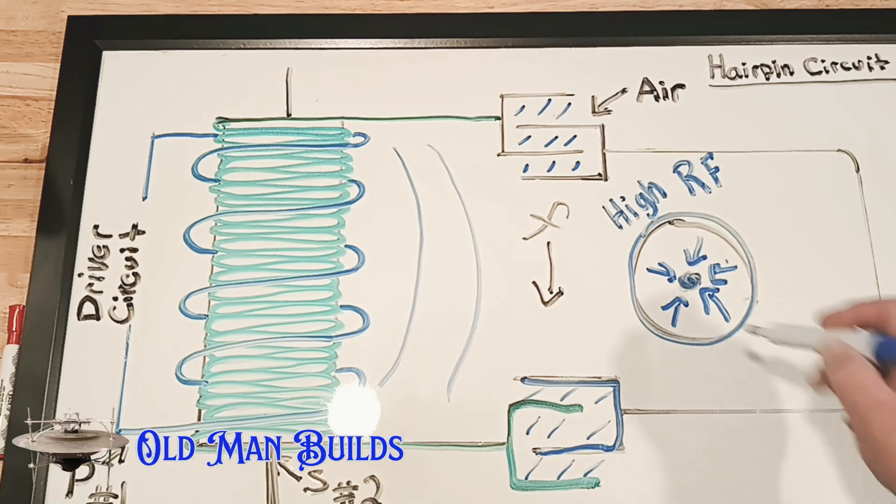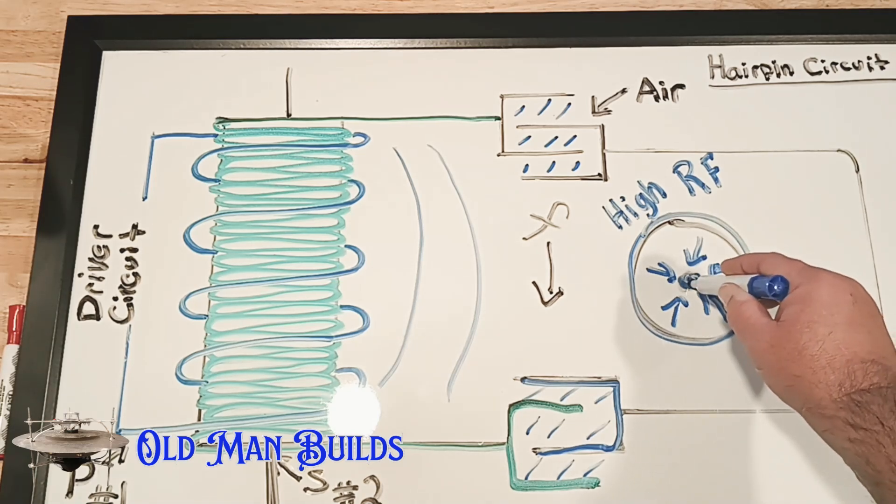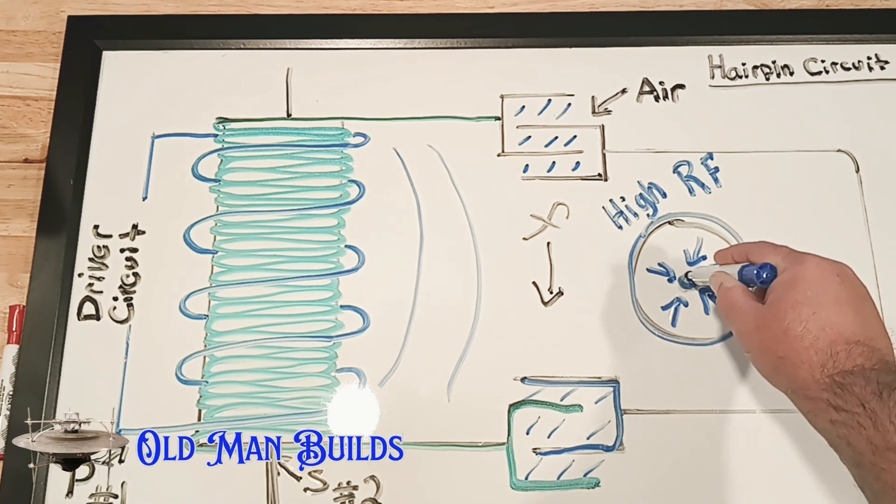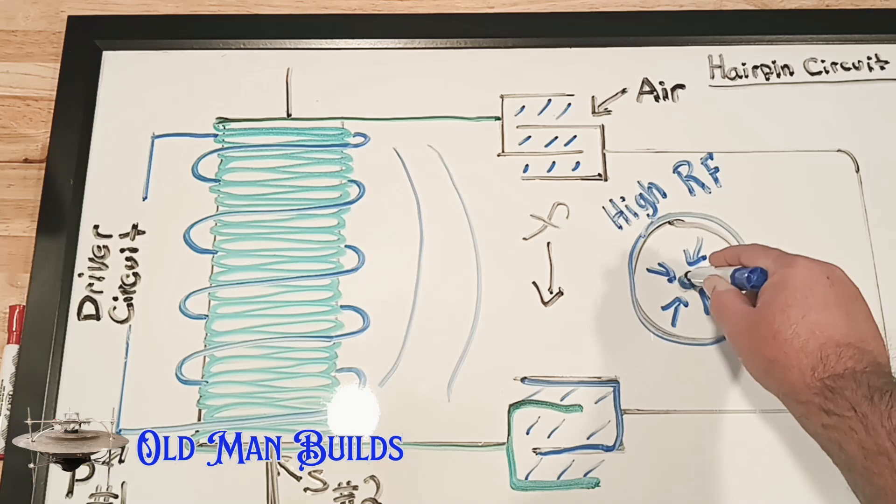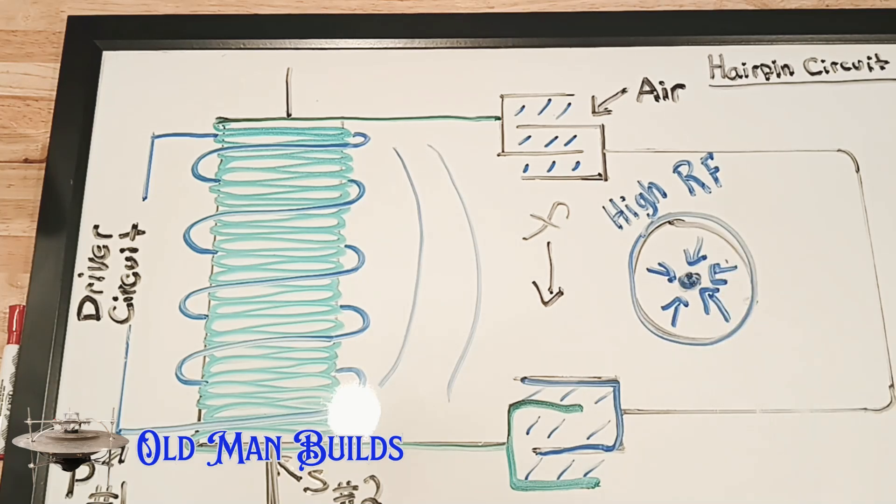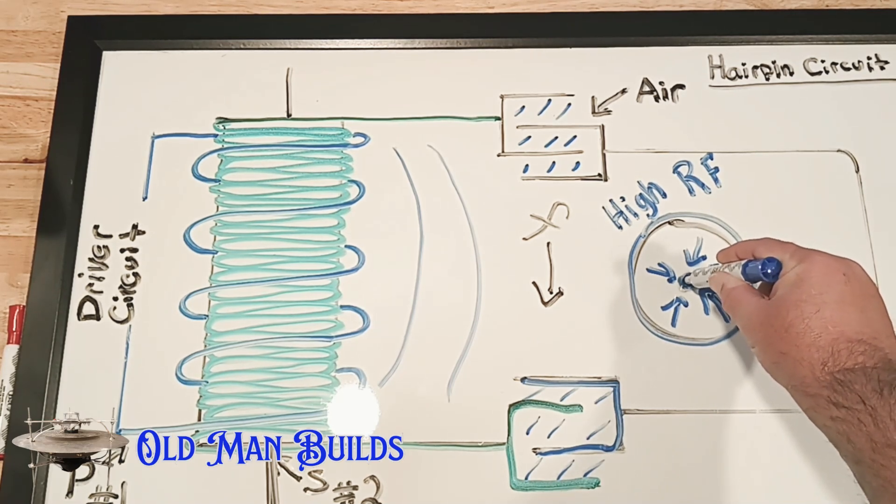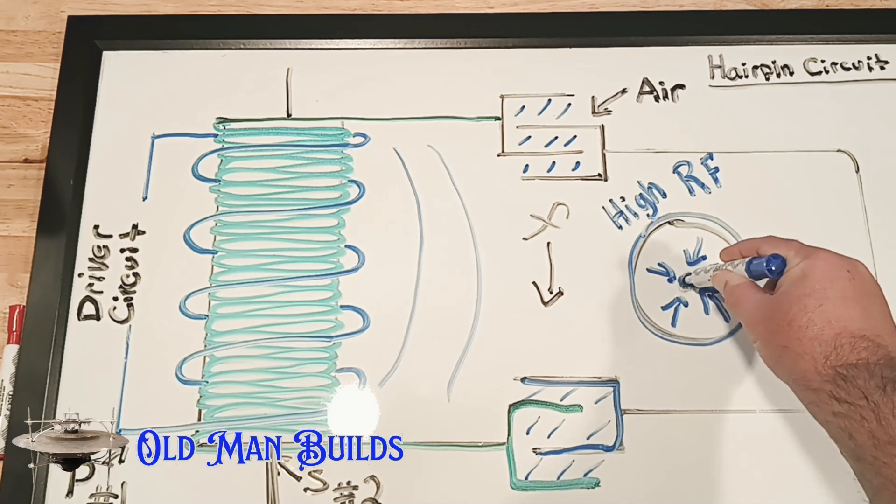But if you reduce the size of this in here, the high RF goes away and the energy stays. By the size of this, you are now changing the direction of understanding of your dielectric field. You now push it to the center instead of to the outside.